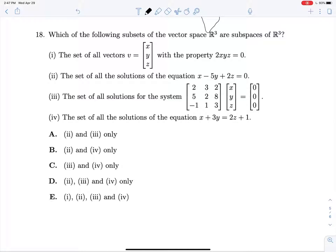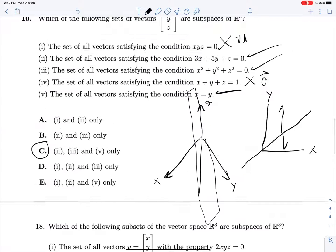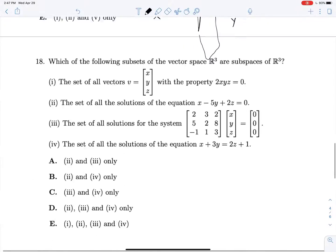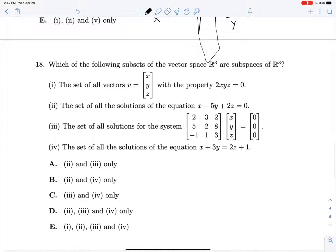18, which of the following subsets of the vector space R3 are subspaces of R3? We're getting pretty used to this. This is just literally the same thing that we had right here. xyz is equal to 0 is the same thing as 2xyz is equal to 0. So it is not a subspace for the exact same reason because it's not closed under vector addition.